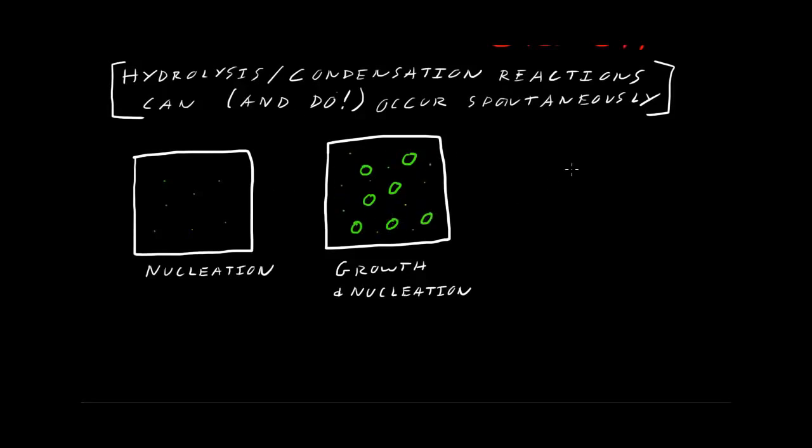Eventually though, there's not enough for nucleation, and now we just have growth of those particles. Those particles bump into each other, and when they bump into each other, they join, and then it becomes more energetically favorable to grow the necks. So to make this little space where these two spheres bonded to each other, to make that grow and widen.